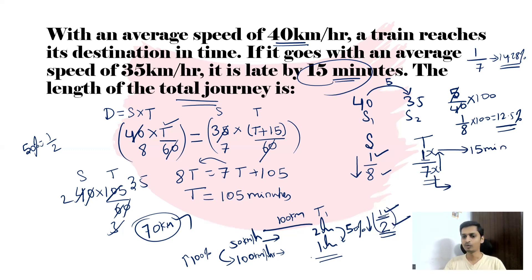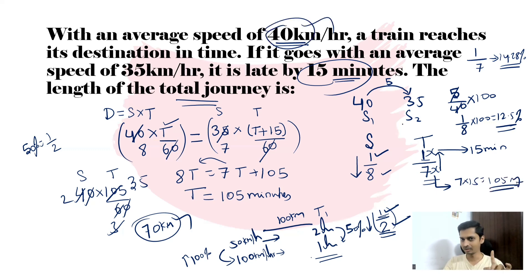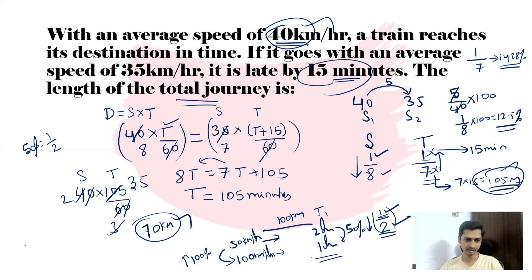Since 1 part = 15 minutes and the old time is 7 parts, old time = 7 × 15 = 105 minutes. Now, distance = speed × time = 40 × (105/60). Canceling gives 70 kilometers. The length of the journey is 70 kilometers — the same answer as the formulaic method.